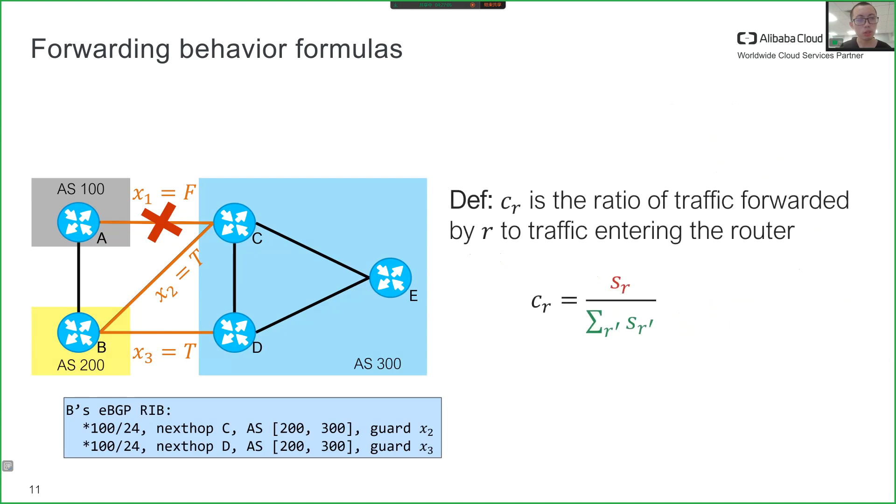To model ECMP, we use CR to denote the ratio of traffic forwarded by R to traffic entering the router. First, to have a non-zero ratio, the route must be selected, as shown in the numerator. Second, if there are multiple routes selected, the ratio is the inverse of the number of selected routes, as shown in the denominator.